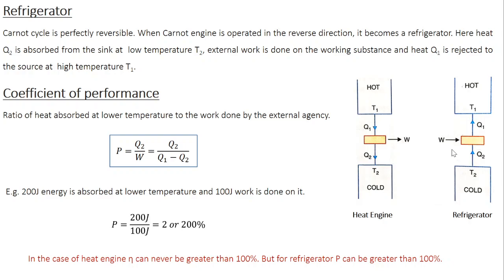In the case of a refrigerator in your home, the external work is done by electricity. Just like efficiency characterizes a heat engine, an important parameter for a refrigerator is the coefficient of performance, defined as the ratio of heat absorbed at the lower temperature to the work done by the external agency. Heat absorbed at the lower temperature is Q2, and the work done is Q1 minus Q2. So coefficient of performance P equals Q2 divided by Q1 minus Q2.